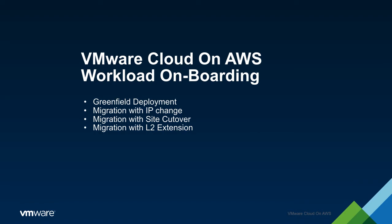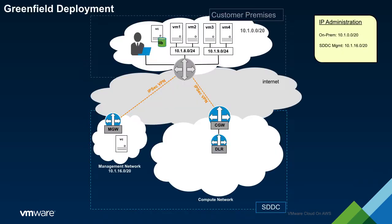Let's begin by discussing greenfield deployments. With a greenfield deployment, we are deploying new workloads into the SDDC from ISO or OVA files. We will assume that the SDDC has already been provisioned, IPSec VPNs have already been established to the on-prem environment, and the security policy of the MGW has been configured.